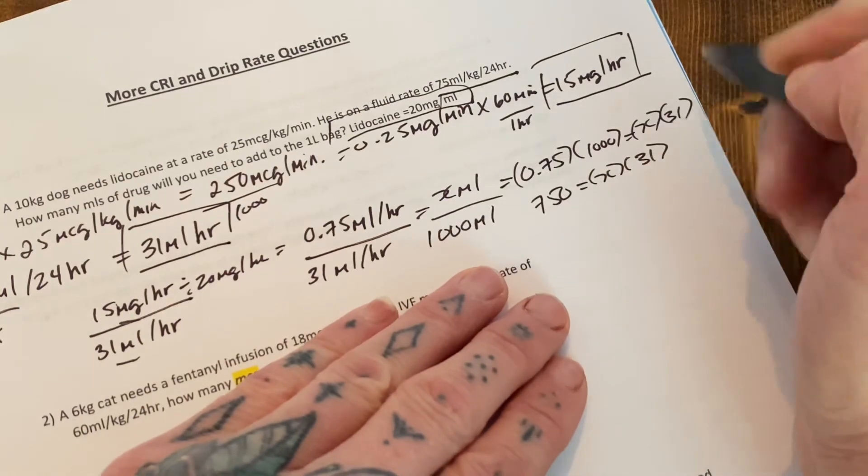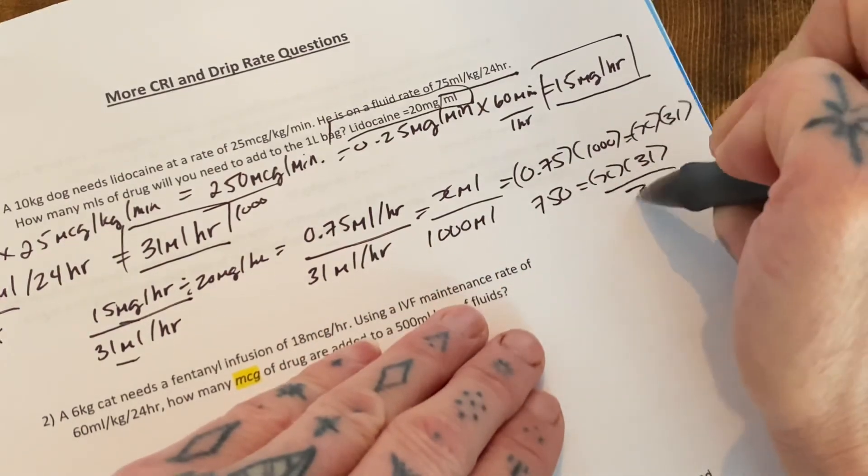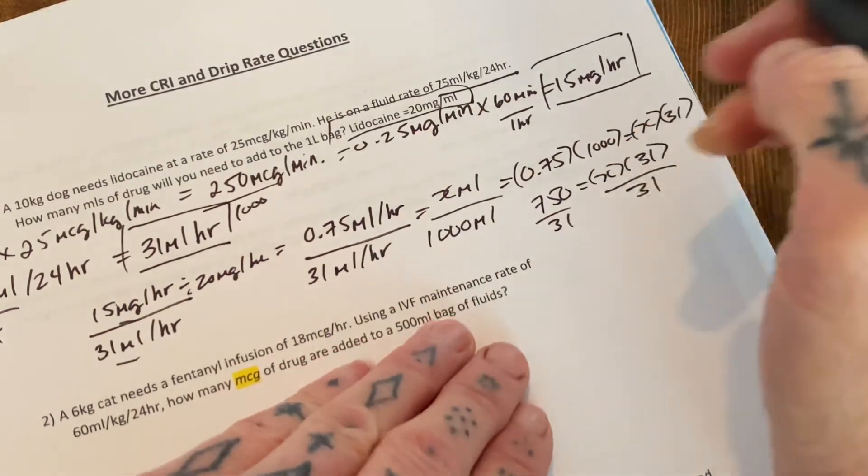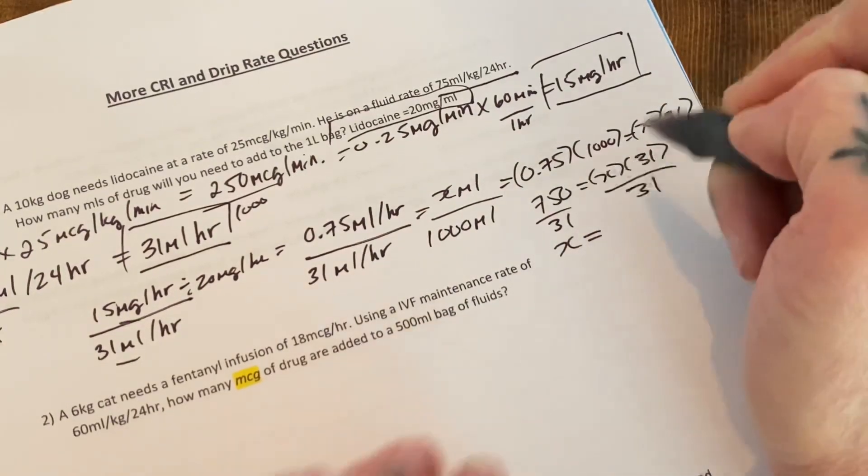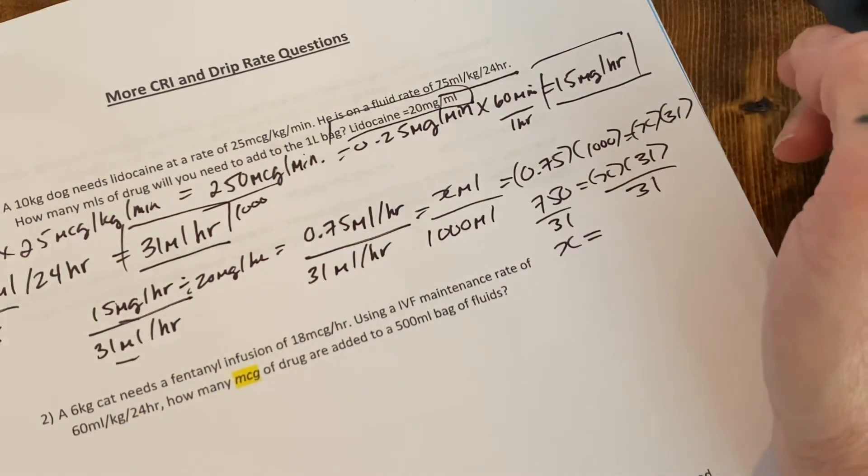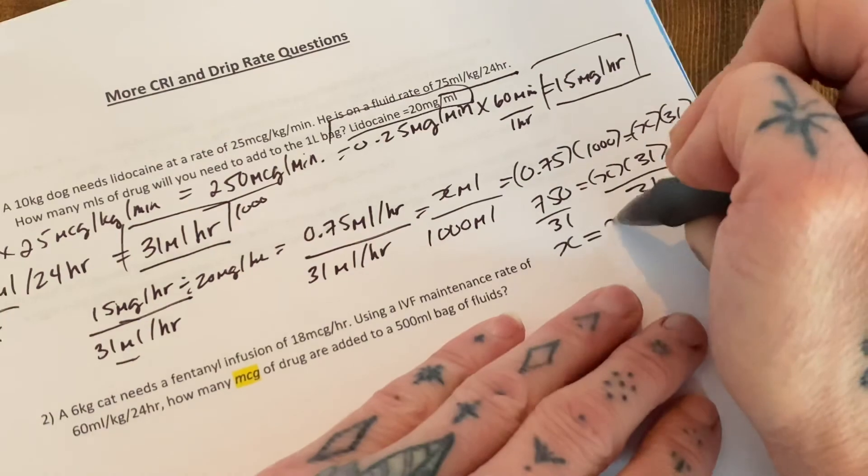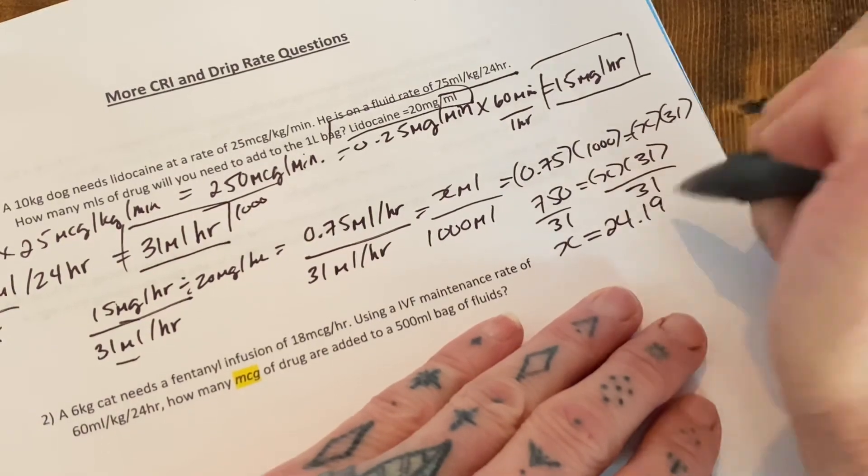To isolate X, you have to divide everything by 31, including this. So then X equals 750 over 31. So 750 divided by 31. So that is 24.19 mils.